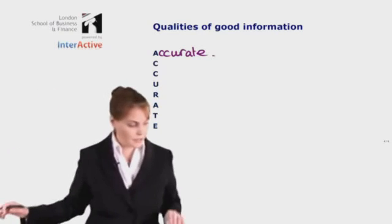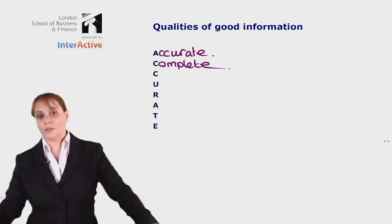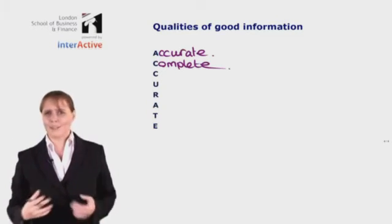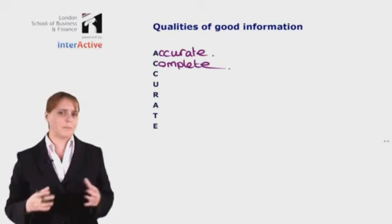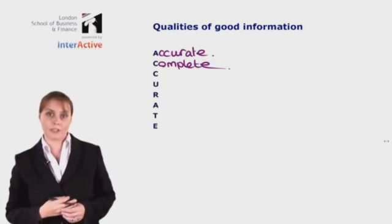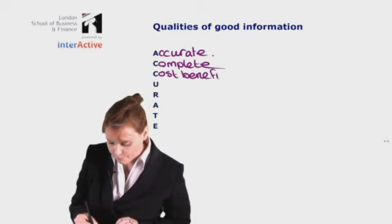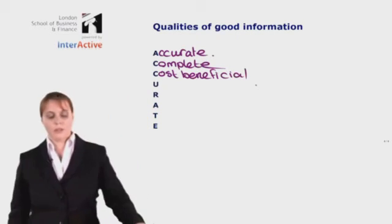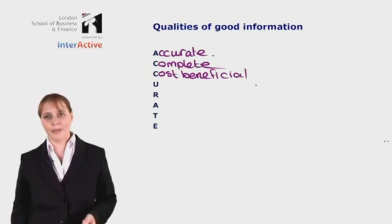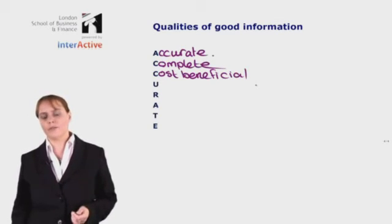The second characteristic of good information is that it needs to be complete. If I ask for directions to the train station and they tell me, 'Oh, it's over there somewhere,' that might be accurate information, but it's not going to help me. I'll start wandering in that direction, get lost again, and have to ask someone else. Good information must also be cost beneficial, meaning the benefit of the information has to outweigh the cost of obtaining it.